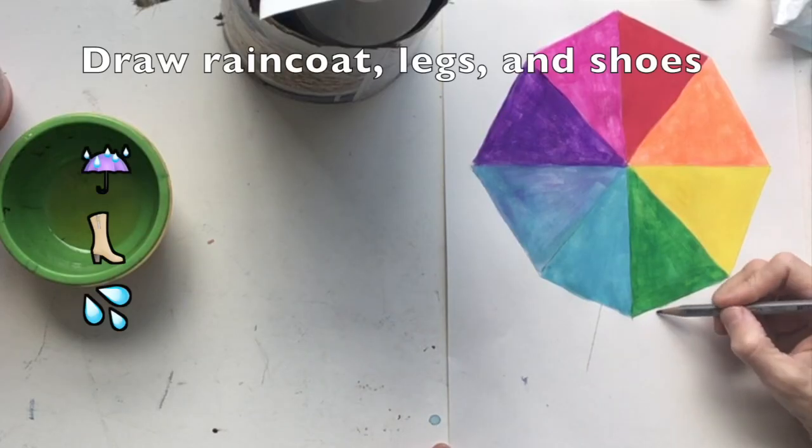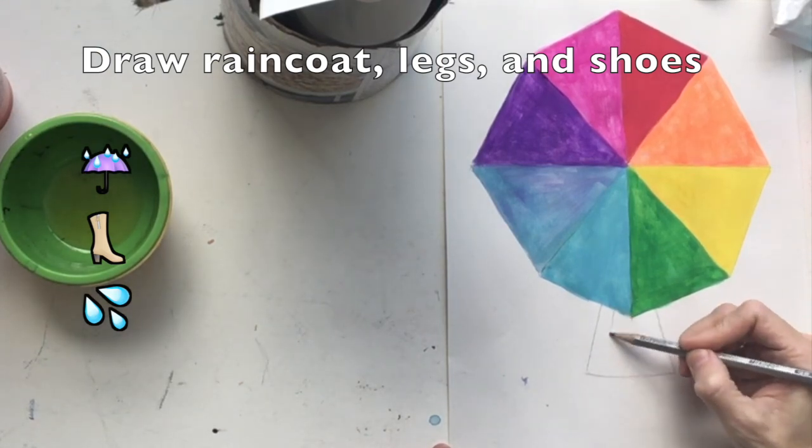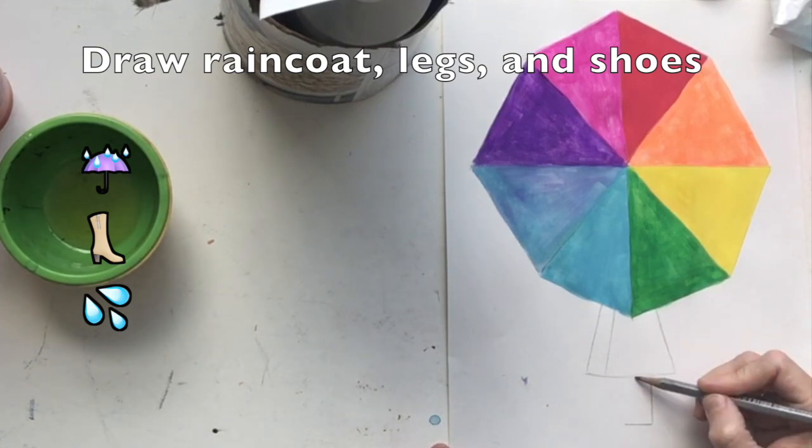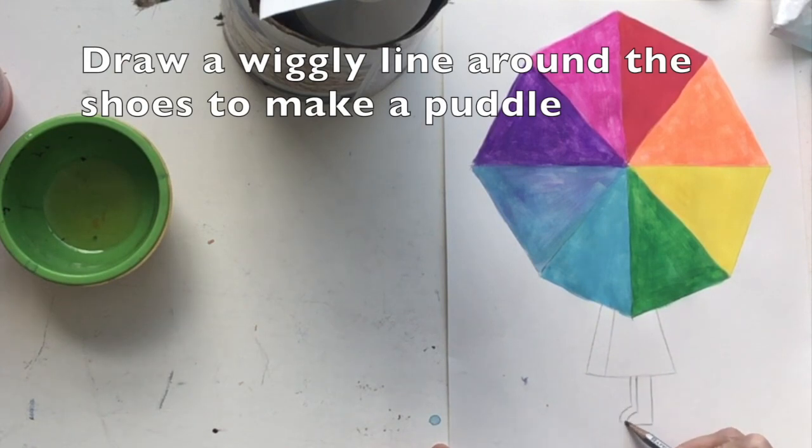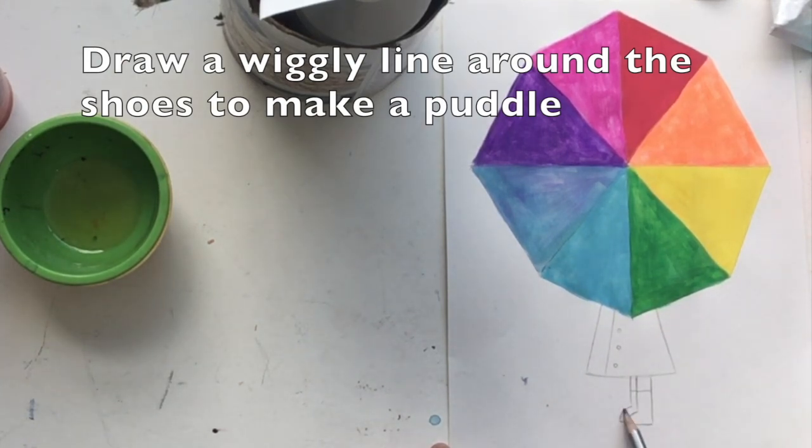You're going to put this on the drying rack, and then next time we see each other, we will build the raincoat, legs, and shoes. Now, your clothes and your shoes and your socks can look any way that you'd like them to.